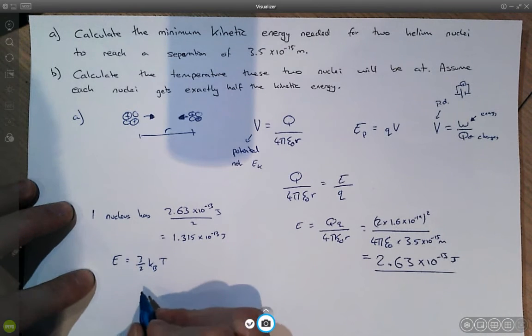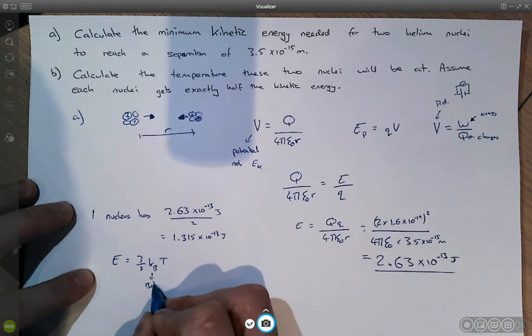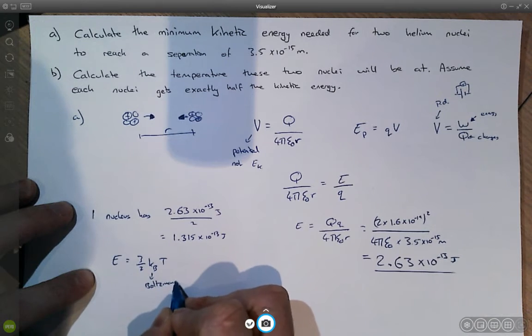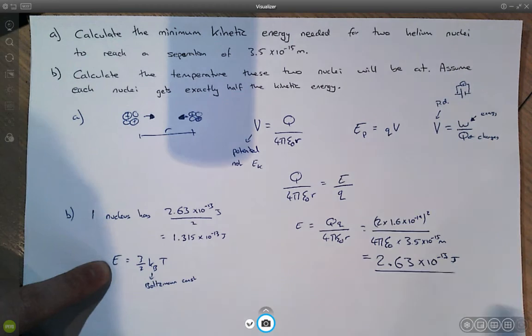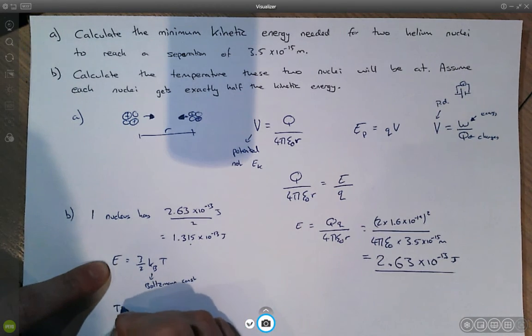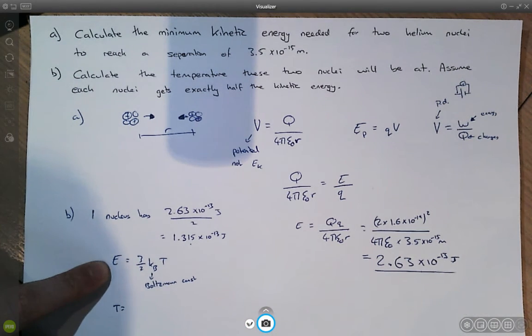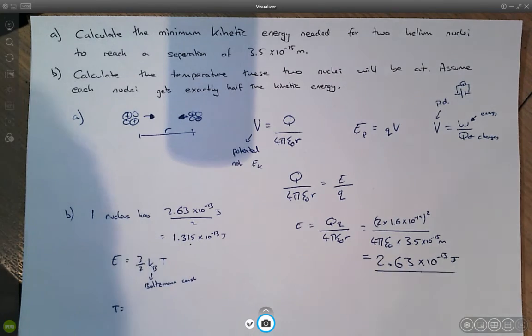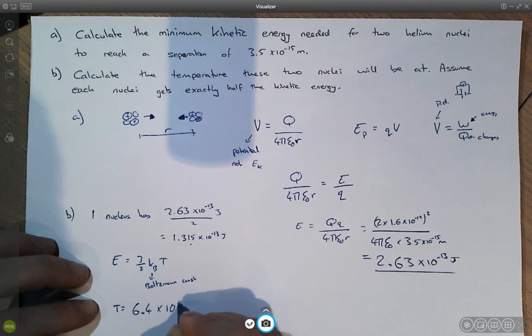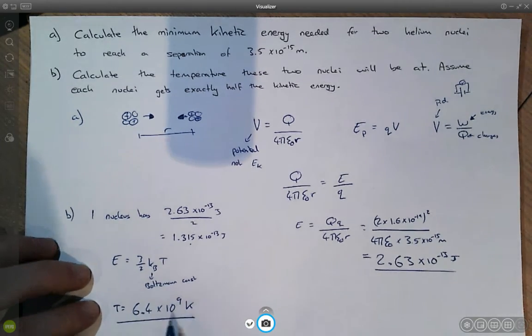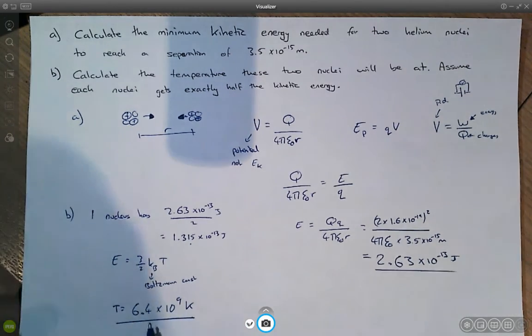So this is the Boltzmann constant. This is the temperature in Kelvin, and this is the energy, which is this here. So if we plug in our numbers, we get our answer of 6.4 times 10 to the 9 Kelvin. So obviously a massively high temperature, but of course, we would expect that in order for fusion to occur.